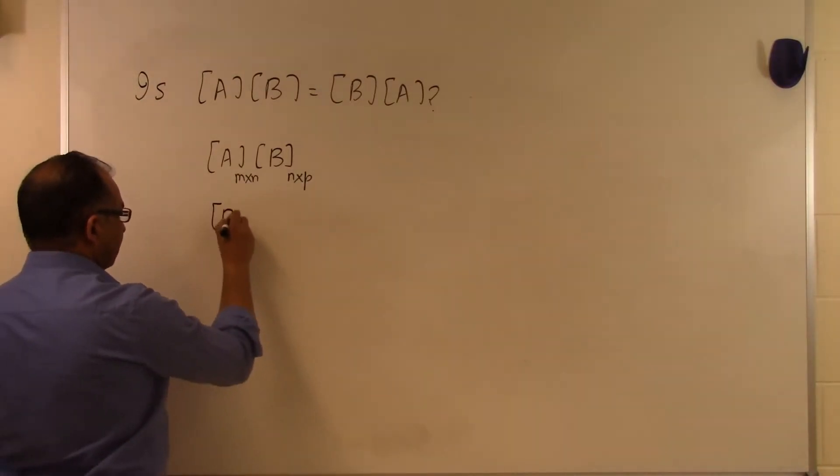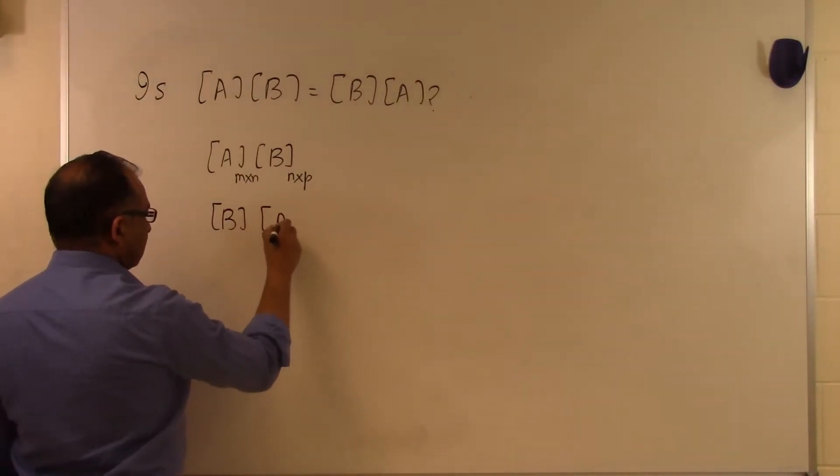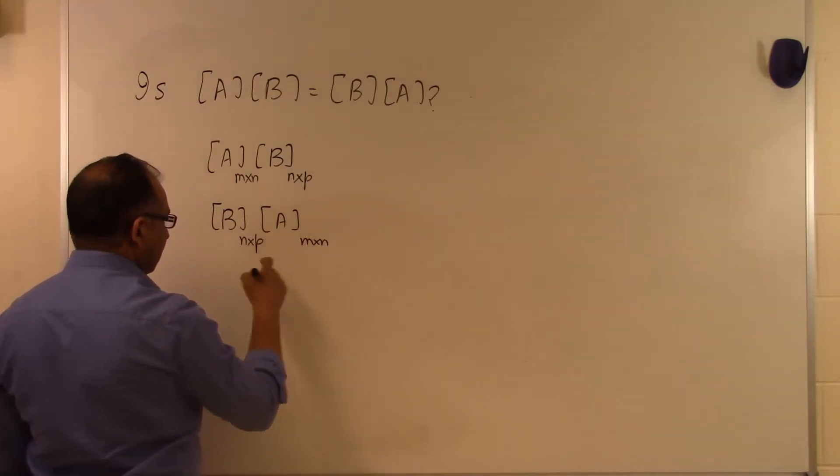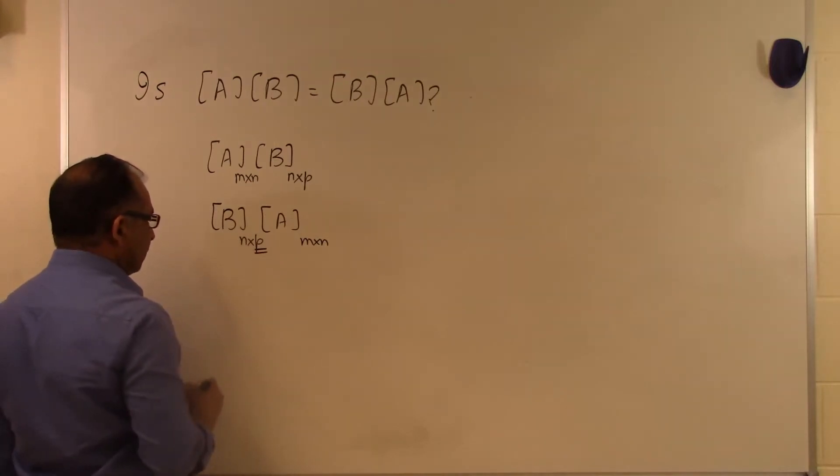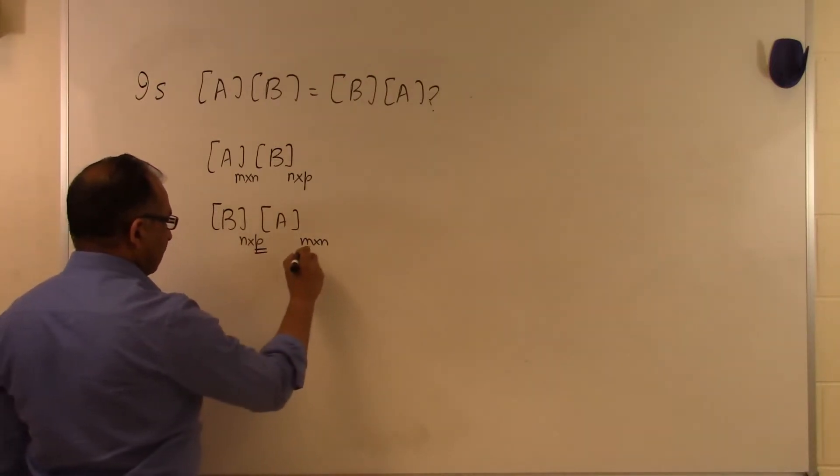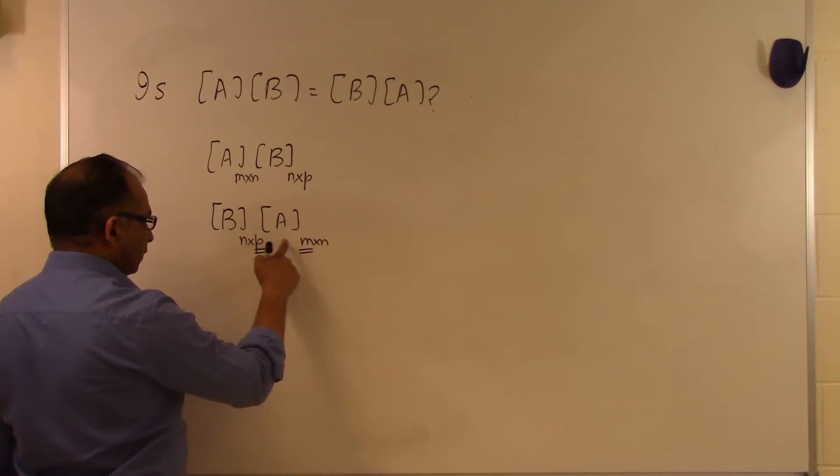Then if I try to say B times A, this is N rows and P columns and this is M rows and N columns. I already see that the number of columns here is not the same as the number of rows here unless P is same as M.